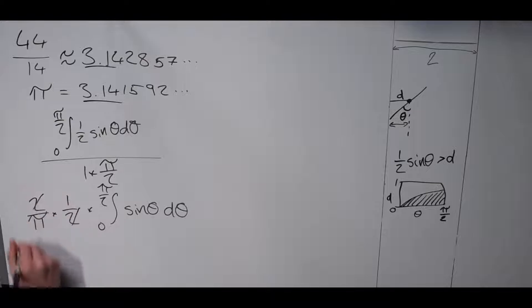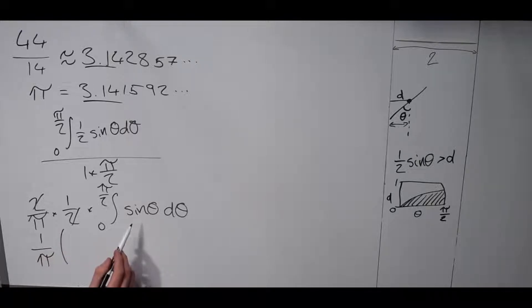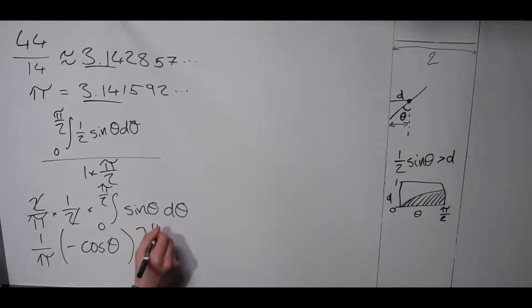These cancel out, so you get one over pi times integral of sine theta is minus cosine theta. And it's going from zero to pi over two.